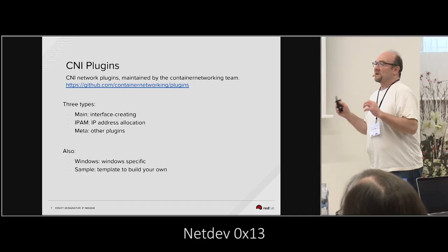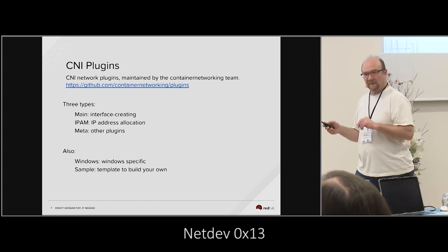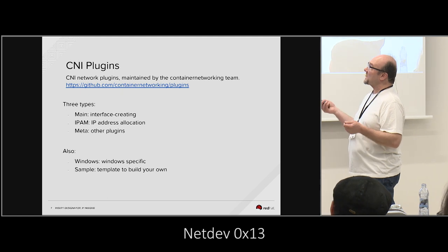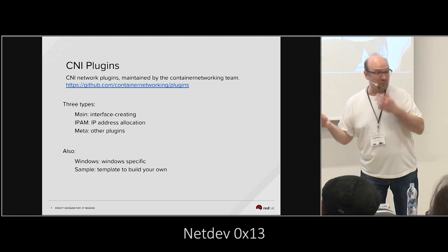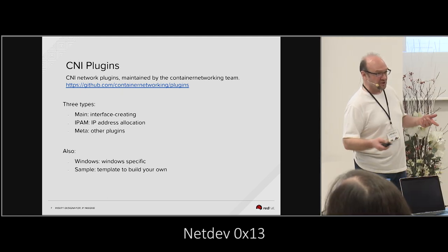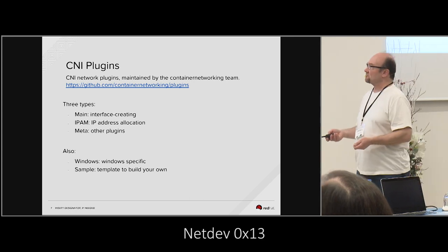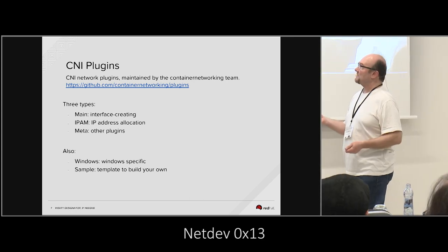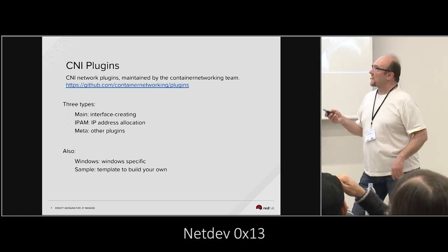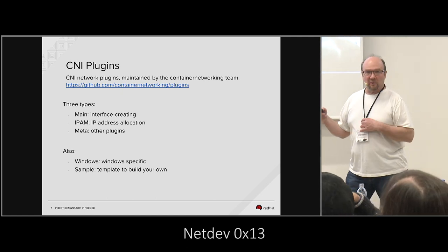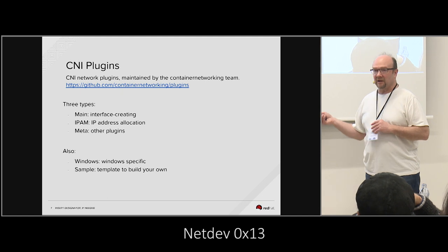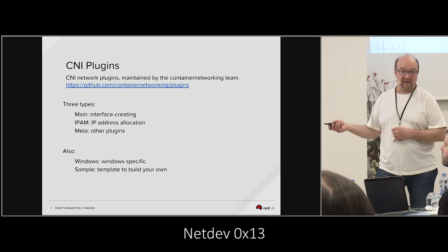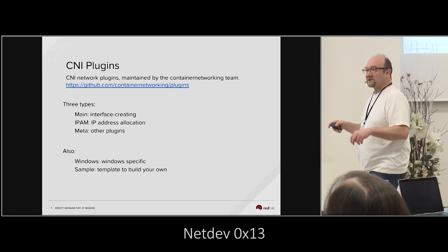There are several basic types of plugins. The ones you're going to care about mostly — you're almost always going to have a main interface. It's what's going to create either a Linux bridge, a port on a Linux bridge, MAC VLAN, or IP VLAN. The other major type is IPAM. For the most part, you always need an IPAM unless you bundle something like a DHCP client in your container. The problem with that is the container model — you're supposed to have one thing running with PID1, something like Apache or NGINX.